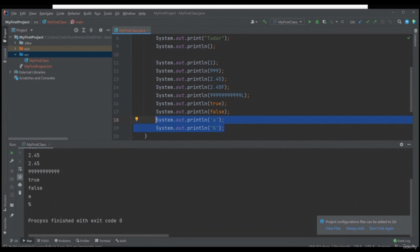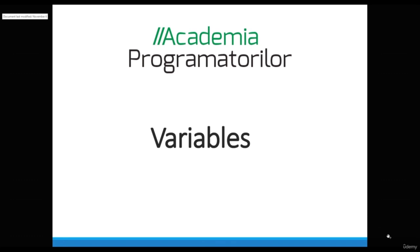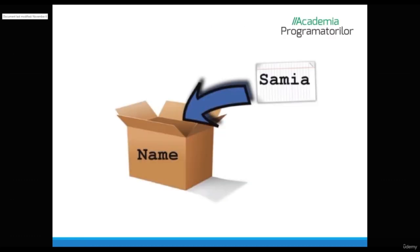In the next video, we will talk about variables. A variable is a data storage container that our program can manipulate. The term variable comes from the fact that it can change its content during our program. We can declare a variable for all the types of data that we've talked about so far. The moment we want to create a variable, we must first determine what type of data it will store. Let's go back to IntelliJ.